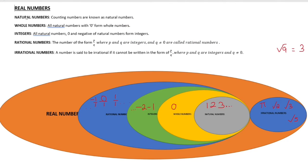Natural Numbers. Counting numbers are known as Natural Numbers. Counting numbers: 1, 2, 3 to infinity.